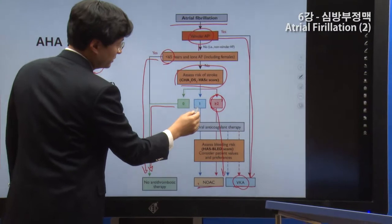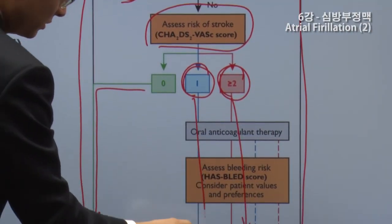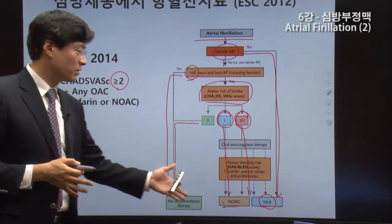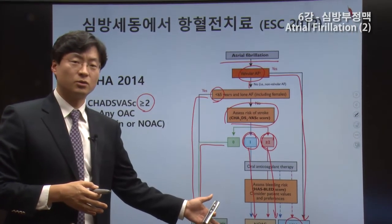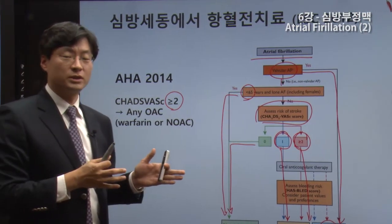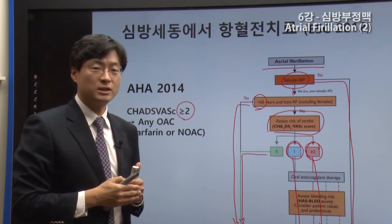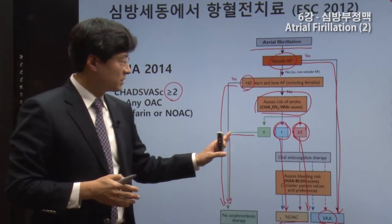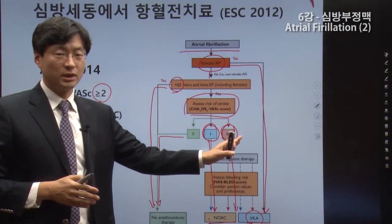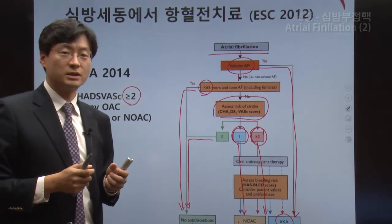In the algorithm, if the CHA₂DS₂-VASc score is 1, anticoagulation may be considered but is not mandatory. If the score is 0, it cannot be used. If the score is 2 or more, anticoagulation can be used. If the score is 1, there are many issues to consider. The clinical question and judgment are needed.